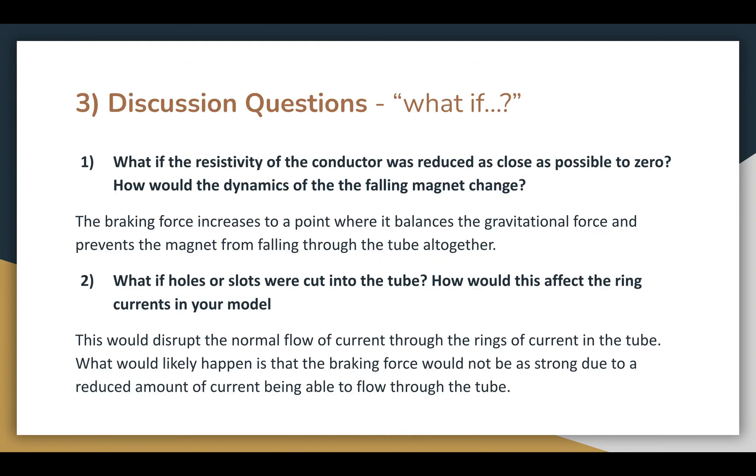Additionally, what would happen to the magnet if the resistivity approached zero? Well, as the resistivity approaches zero, the force pushing the magnet up increases until a point is reached when the force on the magnet is large enough to stop the magnet from falling through the tube at all.